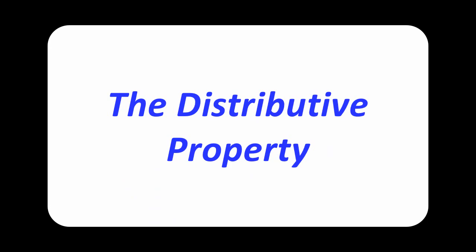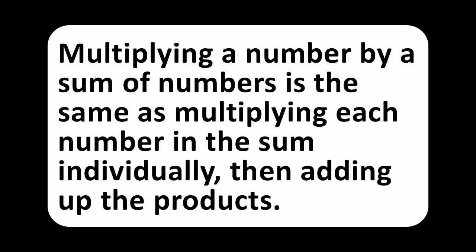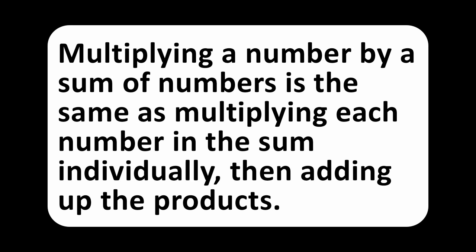The distributive property. Multiplying a number by a sum of numbers is the same as multiplying each number in the sum individually, then adding up the products.